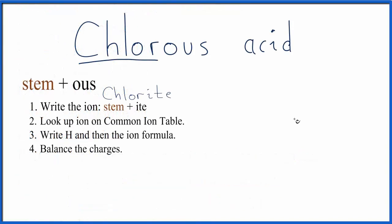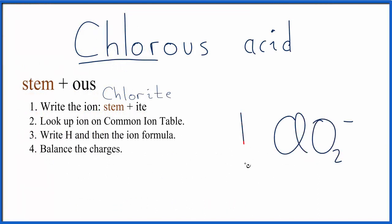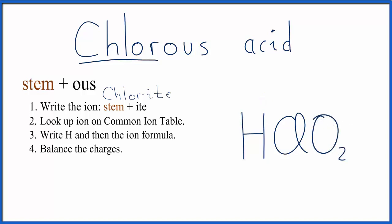We write ClO2-, then we put H in front of this ion — that's what makes it an acid. Now we need to balance the charges. Hydrogen always has a plus charge, and the ClO2- polyatomic ion has a negative charge, so the positive and negative cancel out. That means the formula for chlorous acid is HClO2.